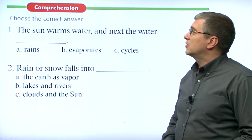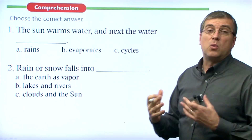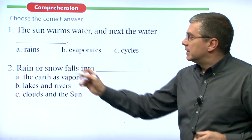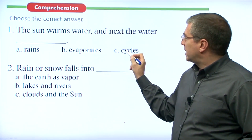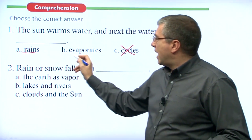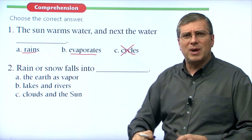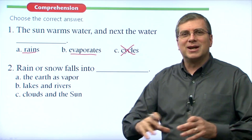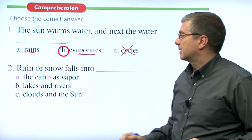Let's take a look at the comprehension questions. Number one: the sun warms water — and next, the water does what? Does it rain, evaporate, or cycle? Cycle is a noun, not a verb, so we can cross that off. Water is in the ocean or lake already — it doesn't rain inside the lake. What happens is the water gets hot and it evaporates — it spreads out. Number two: rain or snow falls into what? Option A says it falls into the earth as vapor — that's not correct.